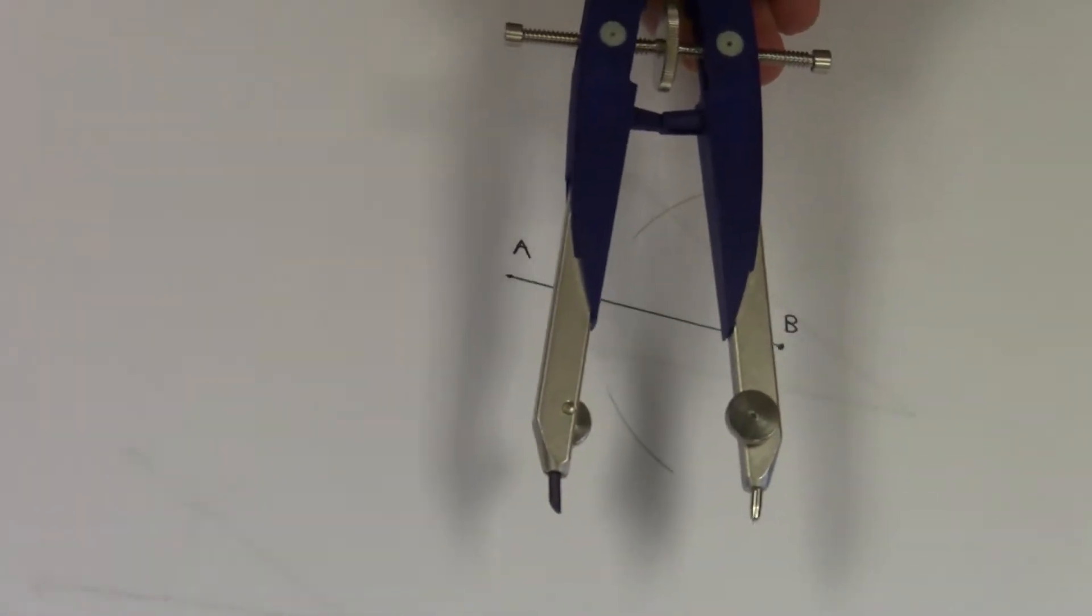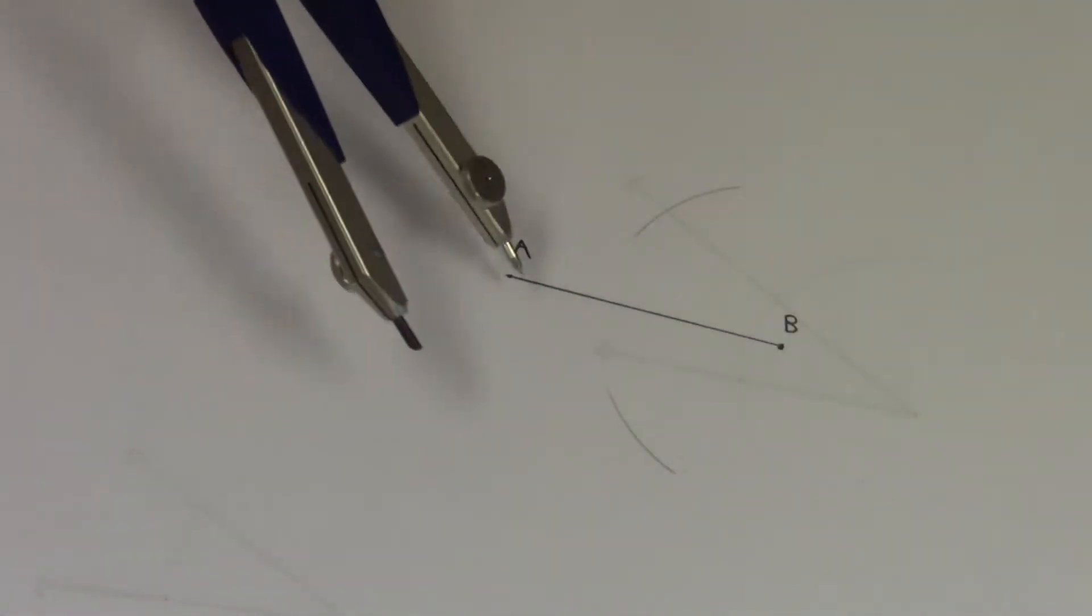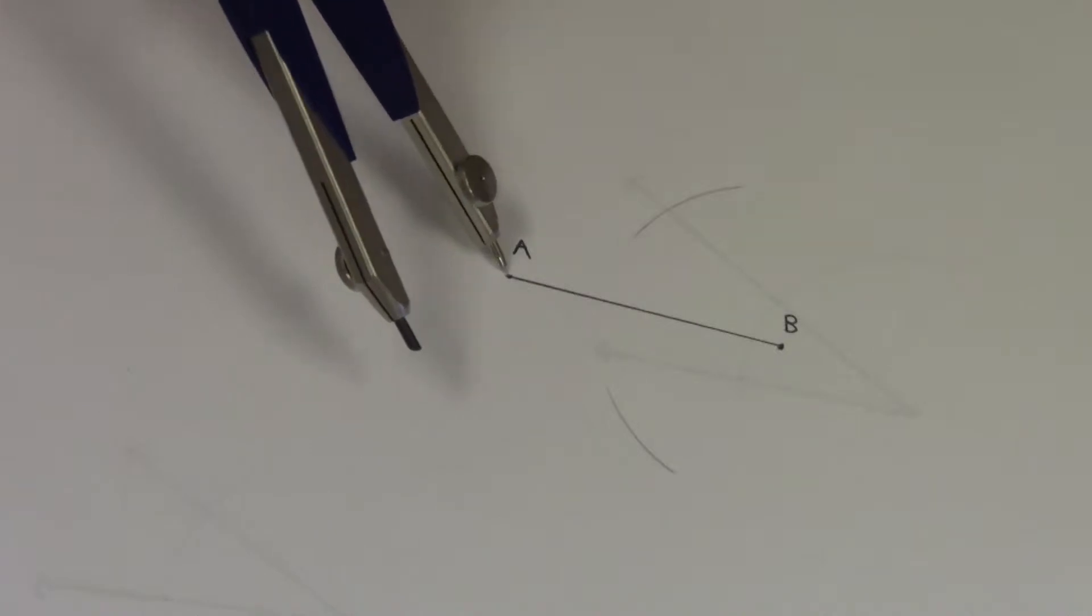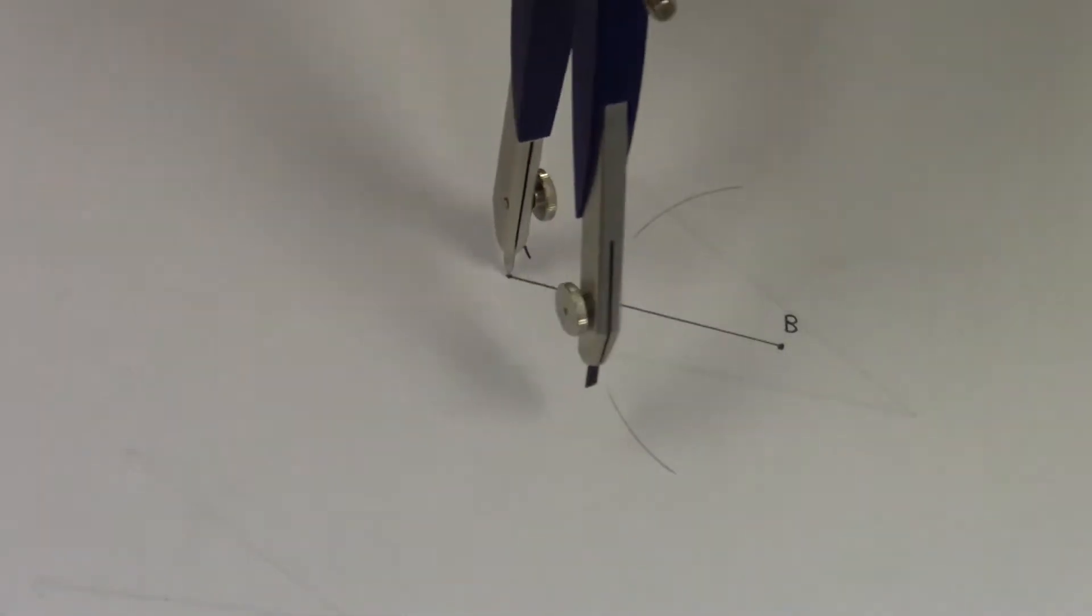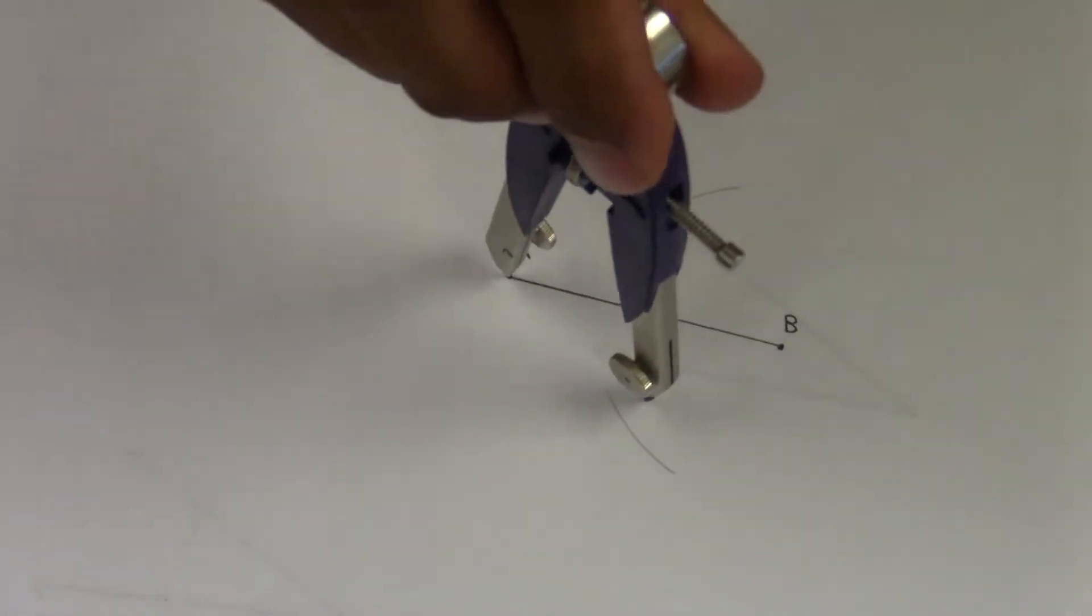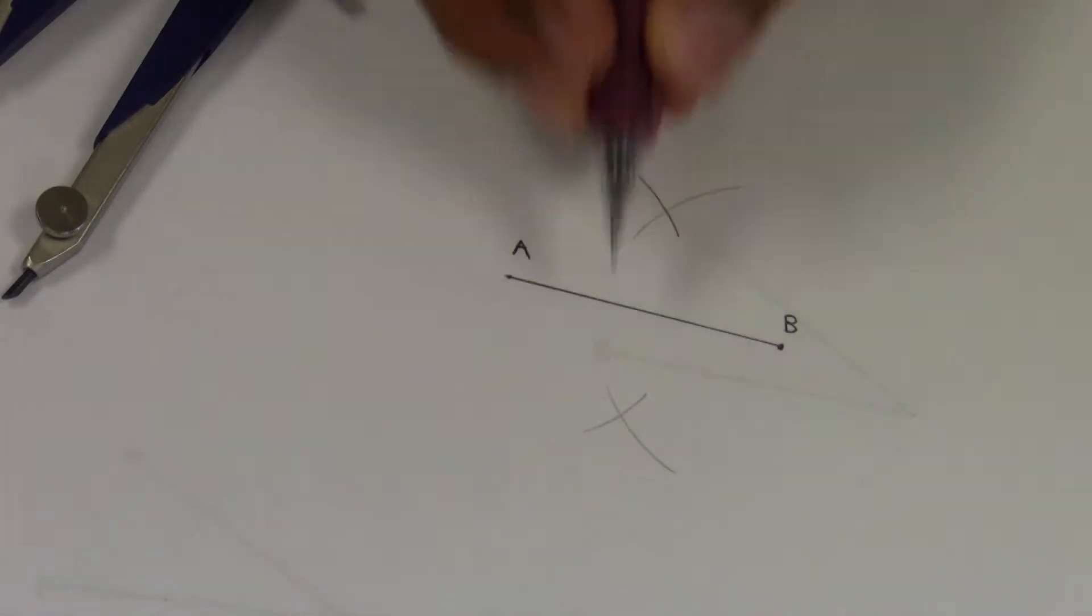Now, using the same opening on your compass, you're going to go to the other endpoint, in this case A, and do the same thing. Notice that I have a point of intersection on the top and below.